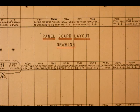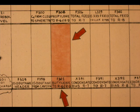A panel board layout drawing is used to locate the controller slot. Find the F302 controller on the panel layout.